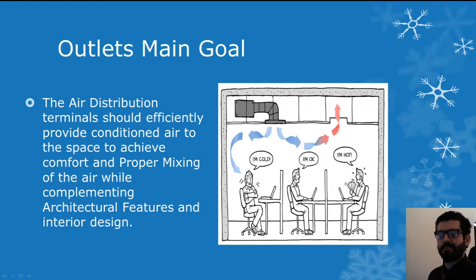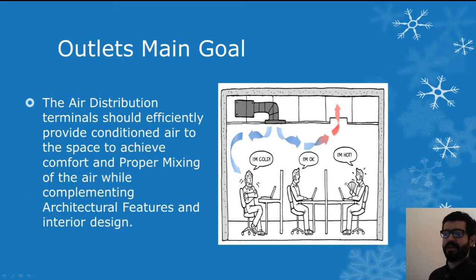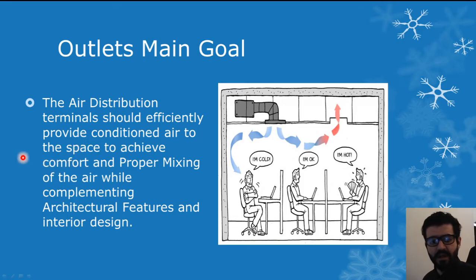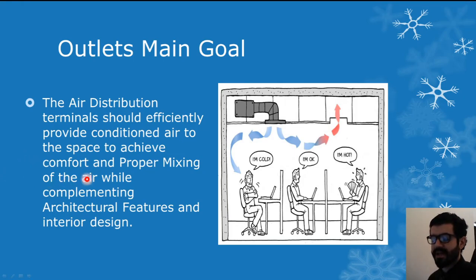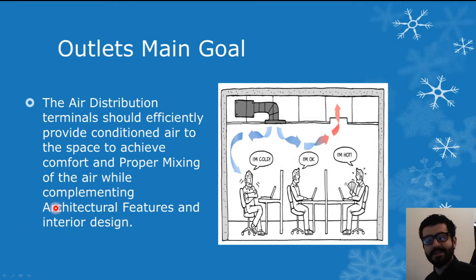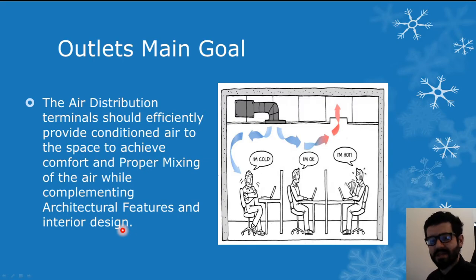It's always important to keep in mind that the main goal for any of those outlets is the following. The air distribution terminals should be efficiently selected to provide the required conditioned air into the space, therefore ensuring mixing of the air in the space, at the same time complying with architectural constraints. You want to make sure that the air flowing into your space is properly being mixed, and it's complementing the architectural and interior design features. You don't want to compromise on both ends — you want to find a solution that meets both requirements.